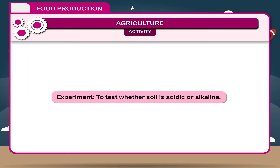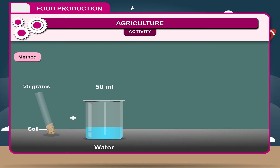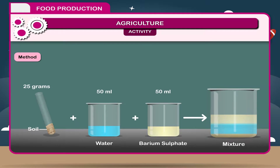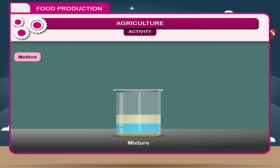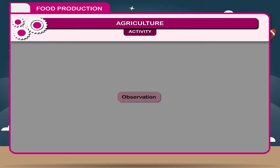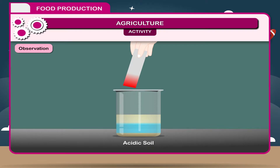Activity — Experiment to test whether soil is acidic or alkaline. Method: Take about 25 grams of soil in a test tube and add 50 ml of water to make a soil solution; the same amount of barium sulfate is added. Shake the solution and wait for some time to settle. In the clear solution, dip litmus paper and observe its color. Observation: If the litmus paper becomes red, the soil is acidic; if it becomes blue, the soil is alkaline.